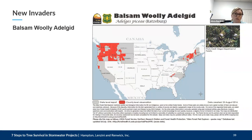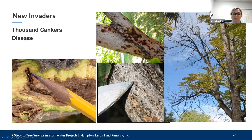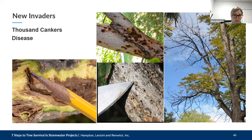Thousand cankers disease involves a walnut twig beetle native to the southwestern United States and a newly identified pathogen — a relatively new concern for black walnut trees. When the beetles feed on tree branches, they introduce a fungal pathogen that kills a small area of tissue, resulting in cankers. As more cankers form, branches die, and over time the entire tree succumbs. It's on Michigan's invasive species watch list. The beetle and fungus can be transported in walnut logs, firewood, and woodworking materials. What to look for: if black walnut trees have wilting leaves or dying branches during summer, check carefully for small cankers.